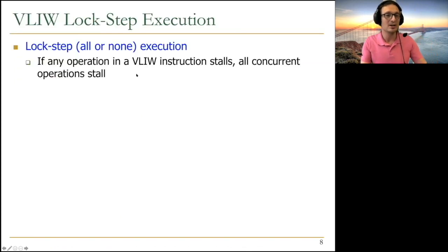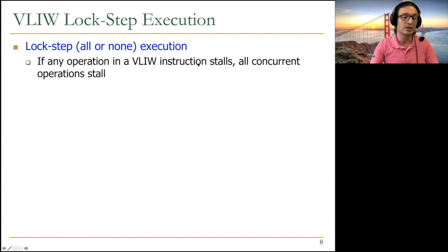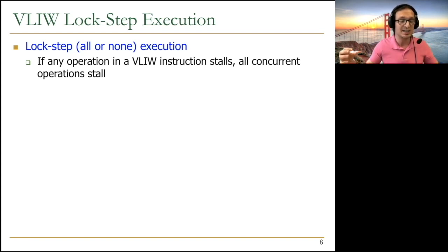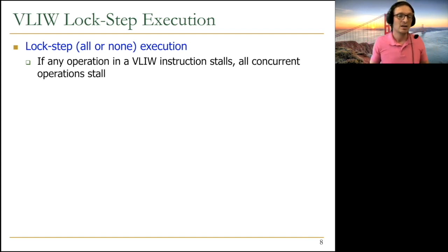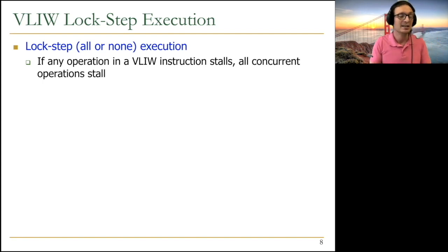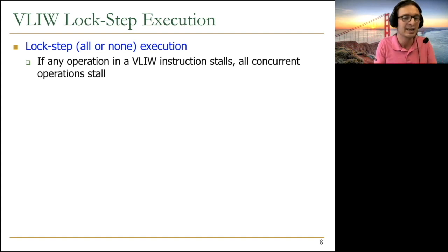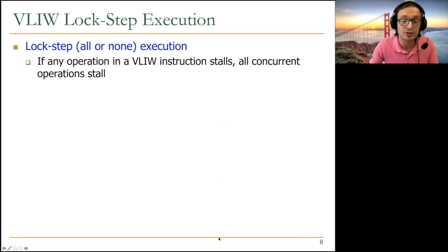Lockstep means all or none — if any operation in the VLIW instruction stalls, all concurrent operations need to stall. The machine treats the bundle as a bundle; it doesn't break them into pieces. This leads to performance issues: if a load instruction takes 100 cycles in a bundle while all other instructions are single-cycle adds, all the independent adds must wait 99 extra cycles. People have tried to develop compilation mechanisms to minimize this cost.